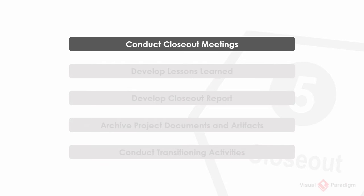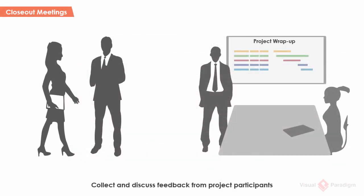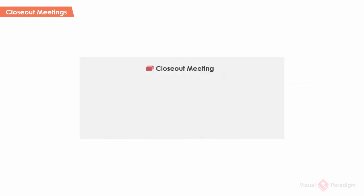Conduct closeout meetings. This phase begins by conducting meetings with different participants of the project, including but not limited to stakeholders who took part in different project activities such as requirements elicitation and acceptance testing, and the project team members. The purpose of these meetings includes identifying lessons learned, discussing things that went wrong and well during the project, and determining how the experiences earned can benefit similar projects in the future.